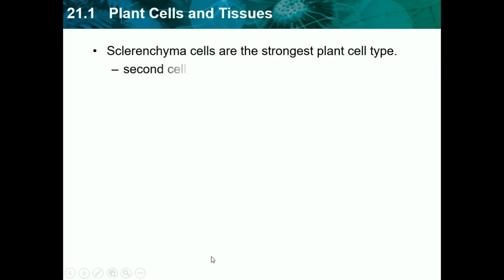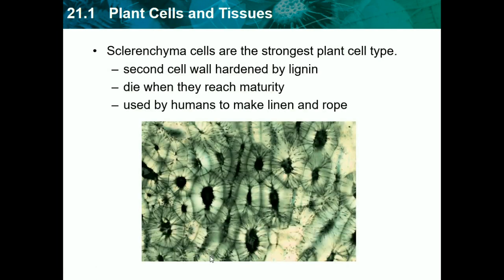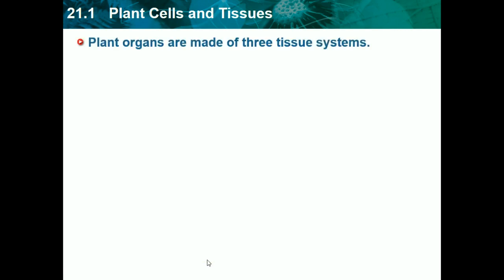Then we have sclerenchyma cells, which are strong plant cell types. They have a second cell wall hardened by lignin, die when they reach maturity, and are used by humans to make linen and rope. These are very strong cells and they basically have two cell walls.